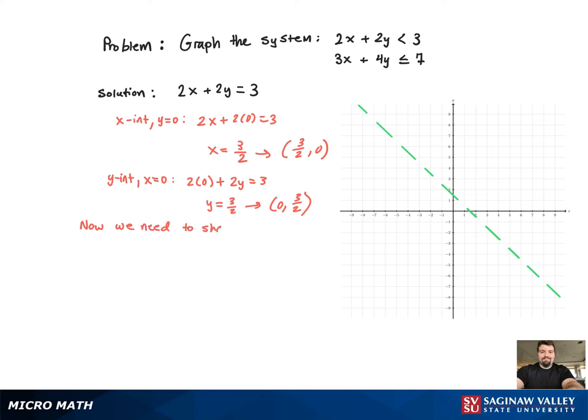Arbitrarily, the test point we're going to use is the point negative 1, negative 1. A lot of times you use 0, 0, but this just goes to show you you can use any test point. So we're just going to use negative 1, negative 1.